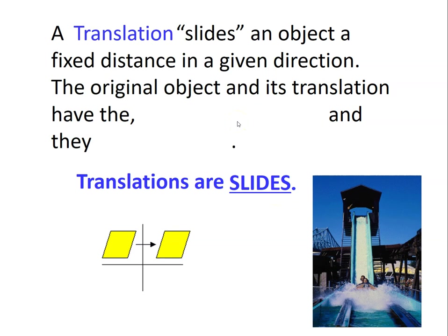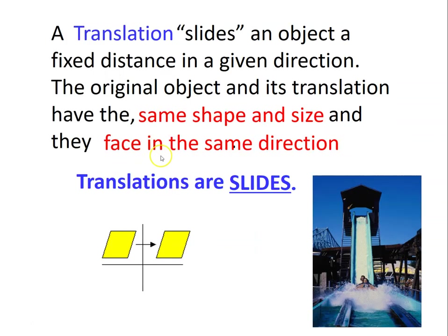A translation slides an object a fixed distance in a given direction. The original object and its translation have the same shape and size, and they face in the same direction. From one place to another place they will transform, but there is no changing of the size and shape of the object. It's like when you're going to slide — there's no change that happens to you after you slide from the top going down, your body is still the same.